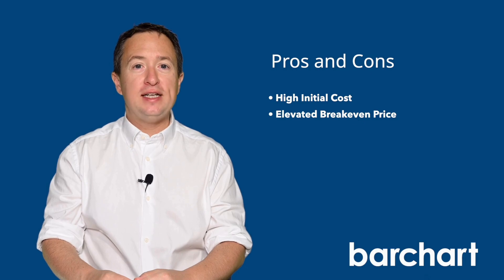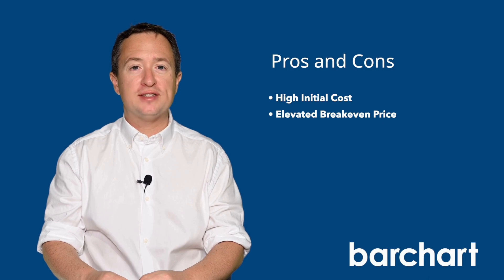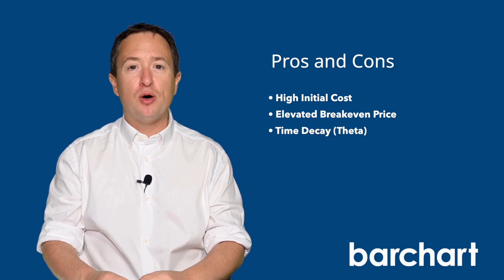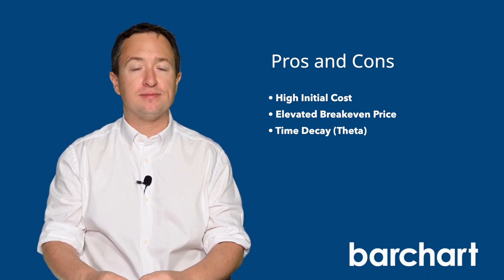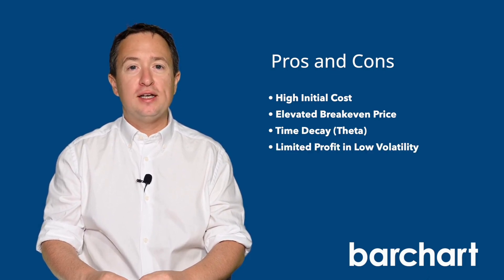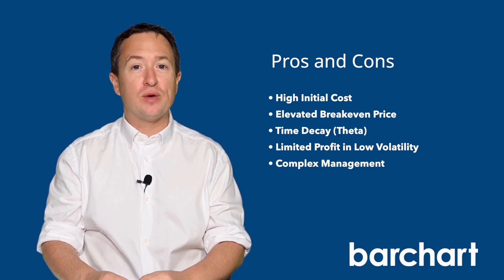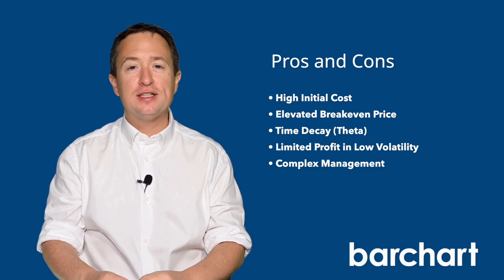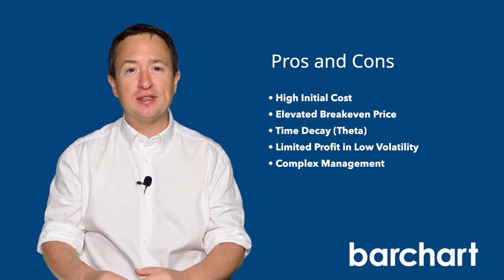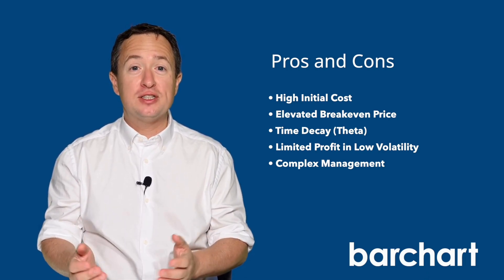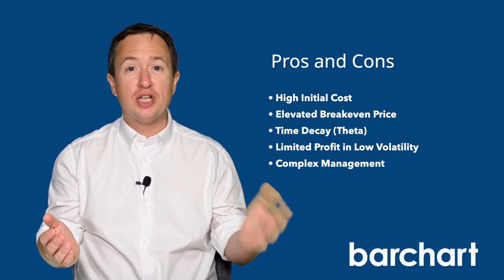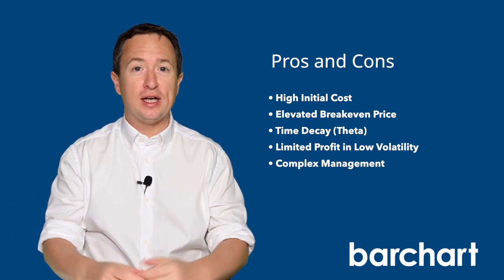The downsides include high potential entry costs since you'll need to buy two options at the start of the trade. As a result, the underlying asset's price needs to move enough for you to break even. Long straddles are also sensitive to time decay, as both trade legs lose value the closer they get to expiration. Low volatility can also affect profitability, and since this trade requires two option legs, it's a bit more complex to manage — you'll need to monitor two positions simultaneously and decide whether to close one leg, adjust the trade, or let it expire worthless.